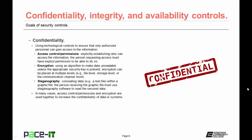Let's talk about confidentiality controls. This is using technological controls to ensure that only authorized personnel can gain access to the information. This is done through several different methods. It can use access control or permissions — this is explicitly establishing who can access the information. The person requesting access must have explicit permission to be able to access it. Then there's encryption, which ensures confidentiality by using an algorithm to make the data unreadable unless the appropriate security key is present.